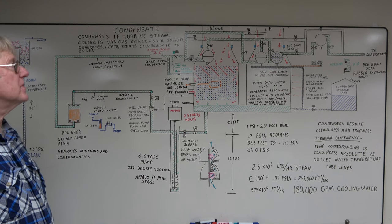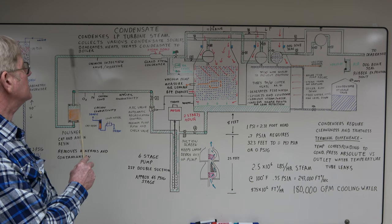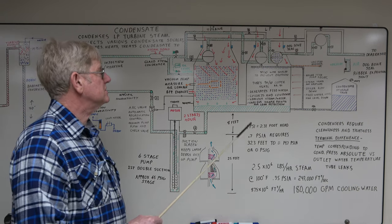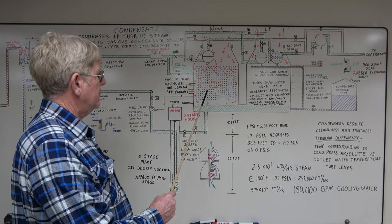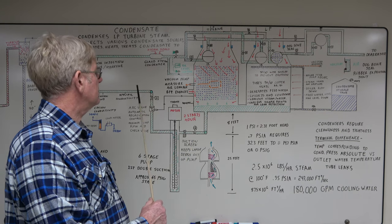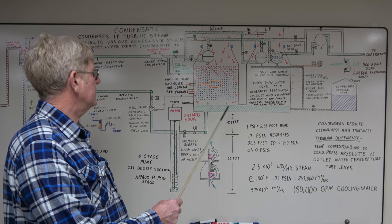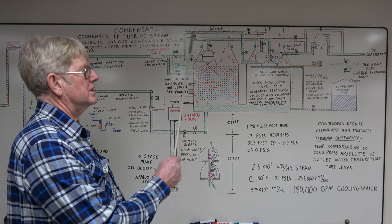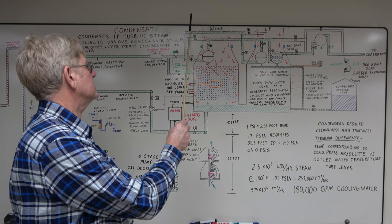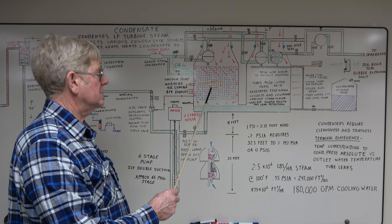Okay, this is the condensate system. The purpose of the condensate system: condense low pressure steam turbine steam, collect various condensate sources, deaerate, heat, and treat condensate to the boiler. This plant has two separate low pressure turbines. They're both feeding surface condensers that are the same and they're tied together. Some plants have an axial flow low pressure turbine that goes straight through into the condenser. This one, the low pressure turbine sits a floor above. The steam comes in the center, spreads both directions for balancing, comes out the end down to your surface condenser where the steam is condensed back to water.